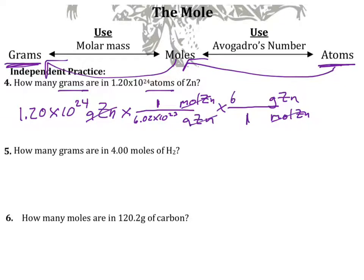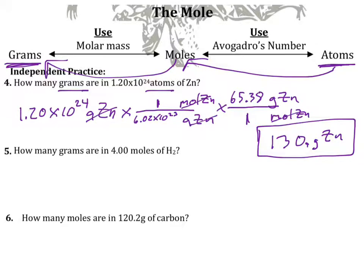Zinc's molar mass from the periodic table is 65.38. Plug that in and type it into your calculator. If done correctly, you get 130. grams of zinc. Note the decimal point is added to make that zero significant, giving us three sig figs to match the three sig figs we started with.